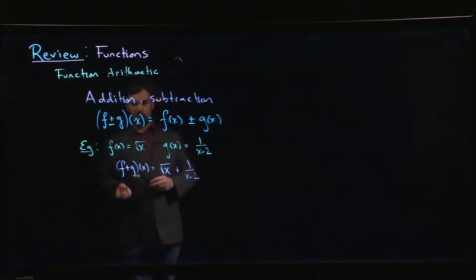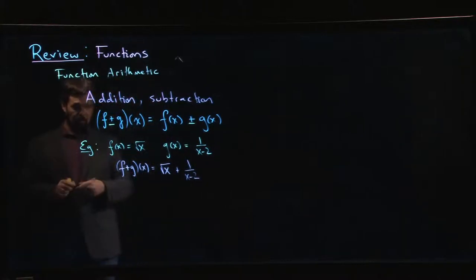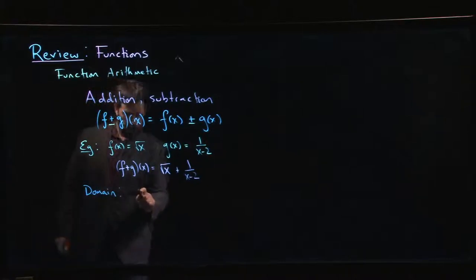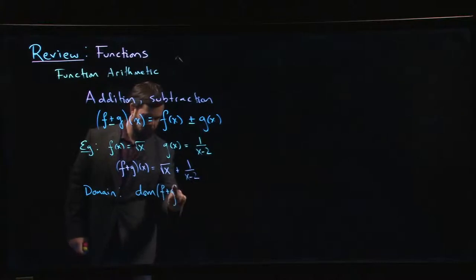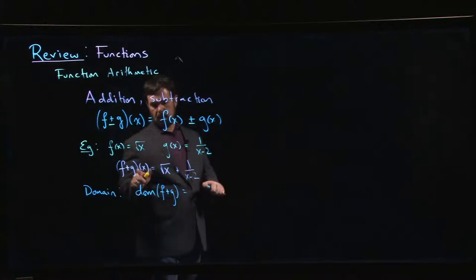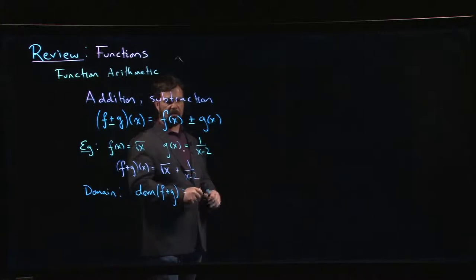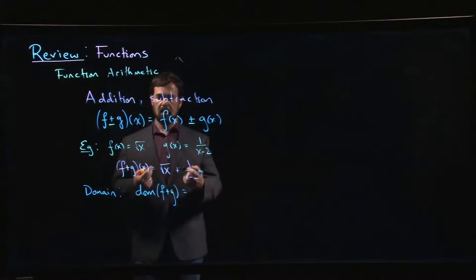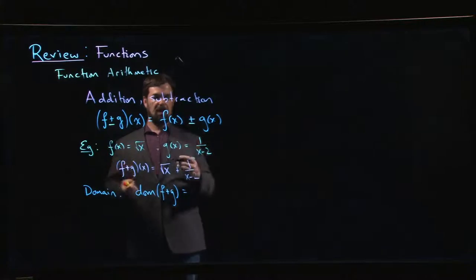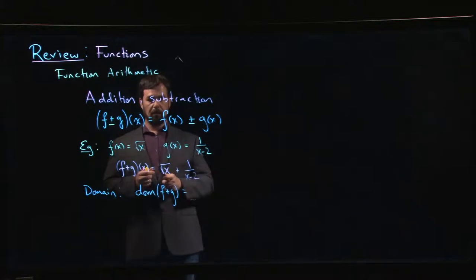One thing that you should probably watch out for when you're doing these is there is a domain issue to be aware of. So the domain of f plus g—well, in order for the right-hand side to be defined, root x has to be defined, 1 over x minus 2 has to be defined. To define the left-hand side, you need to be able to define the right-hand side. The right-hand side is the sum or difference of two numbers, so both of those numbers have to be defined.